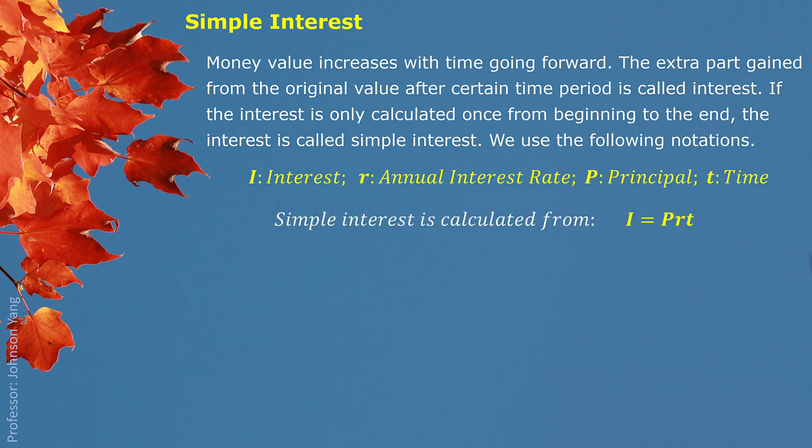Simple interest is calculated as principal multiplied by annual interest rate multiplied by time period t, written as I = PRT. We need to pay attention: the time period must be represented in years since we are using annual interest rate in this expression. So no matter what kind of time unit is given, when we apply this formula, we must switch the time unit into years.